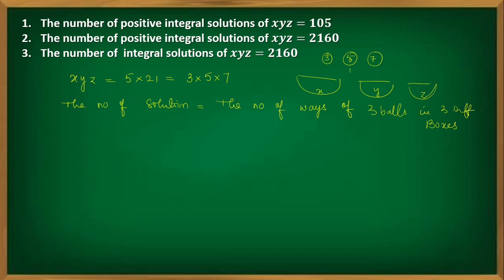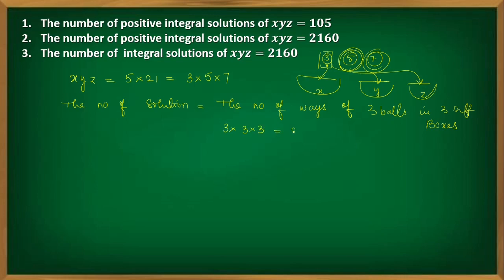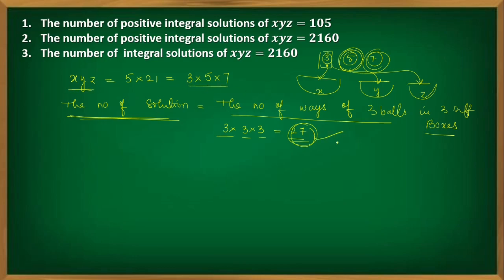This is very simple. For the first ball, you have three choices: it can go into box 1, box 2, or box 3. Similarly, you have three choices for the second ball and three choices for the third ball. So the total number of ways is 3 × 3 × 3 = 27. Therefore, the number of positive integral solutions of x·y·z = 105 is 27.